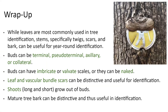Quick wrap-up: normally we use leaves for tree identification, but we can certainly also use stems, bark, twigs, and scars to help with identification year-round. We have different kinds of buds — terminal or axillary, pseudo-terminal or collateral. Buds sometimes have coverings made out of leaf tissue: imbricate with overlapping scales, or valvate where the two halves close like a clam. Some trees don't have scales on their buds, so we call those naked. Leaf and vascular bundle scars can be very distinctive and help with identification. Shoots, long and short, grow out of buds. And mature tree bark can be distinctive and useful in identification.